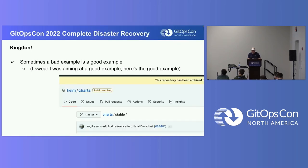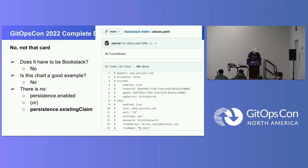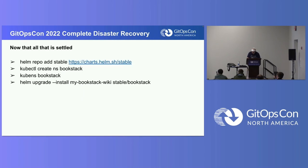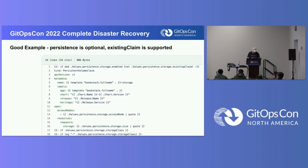We need that existing claim field, and sometimes a bad example is a good example. Here's the good example. In the Helm charts repo from the stable disk — yes, it's a bit long in the tooth — but this is the example I was actually looking for when I thought of Bookstack. Here's our good example: it has a storage section for configuring the storage in the Helm chart, and you can set an existing claim.